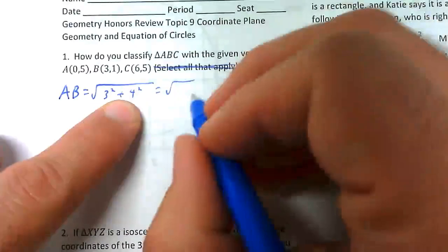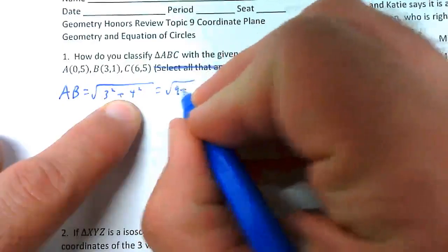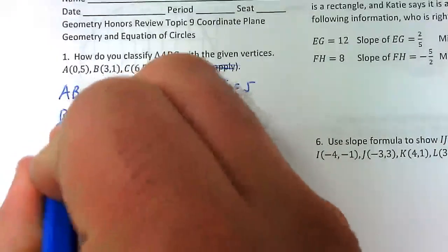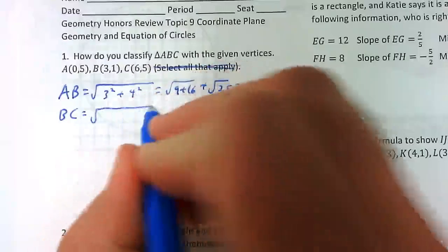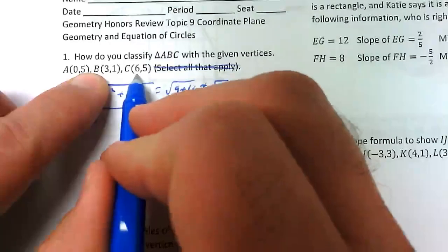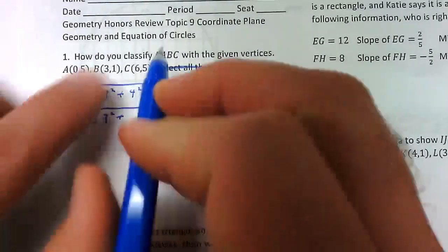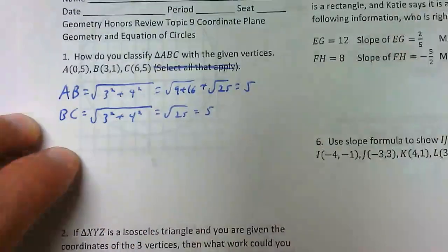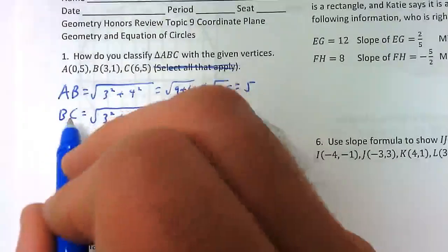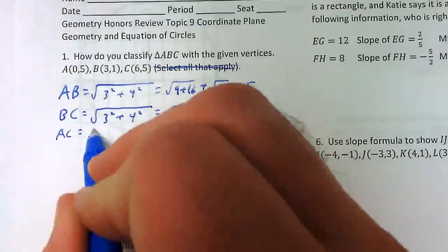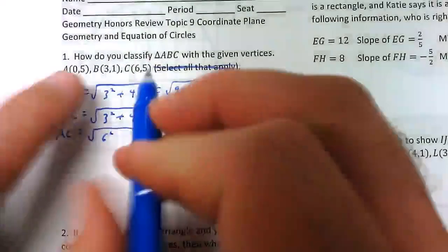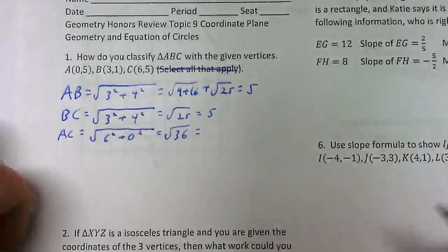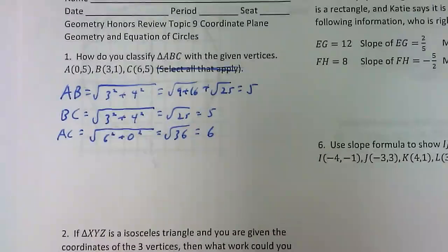3 squared is 9, 4 squared is 16, so 9 plus 16 is 25, so the length of AB is 5. Now do the same thing for BC. The change in x values: 3 minus 6, that's a difference of 3; 1 minus 5, that's a difference of 4. We notice the same numbers, so it's also the square root of 25, which is 5. For AC, 0 and 6 give a difference of 6, and 5 and 5 have no difference, so we get the square root of 36, which is 6.